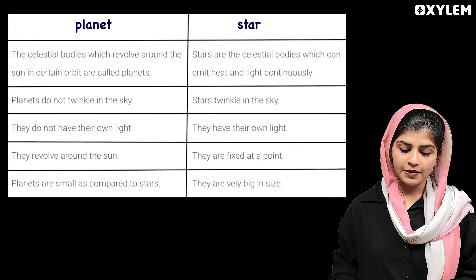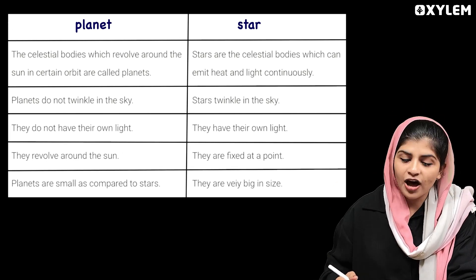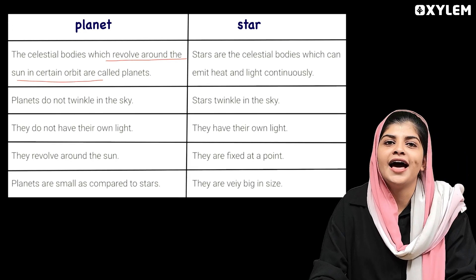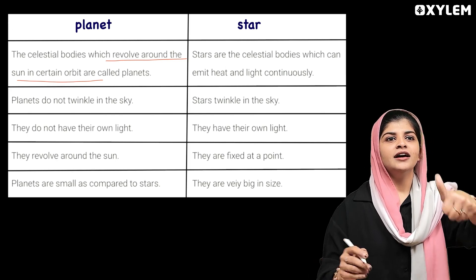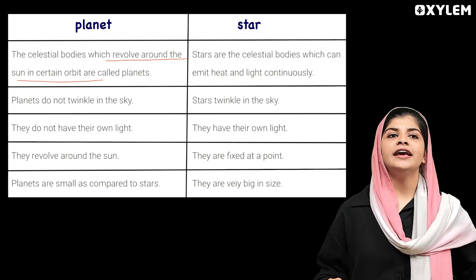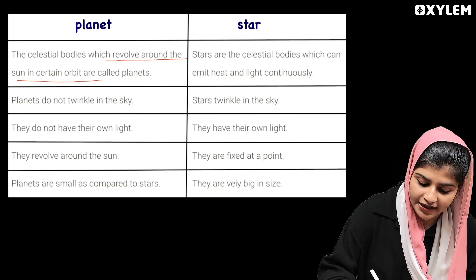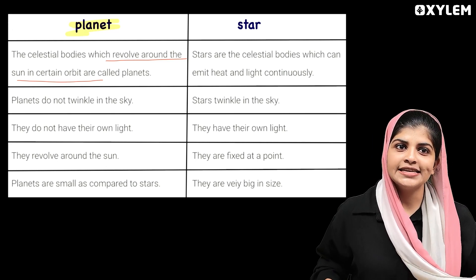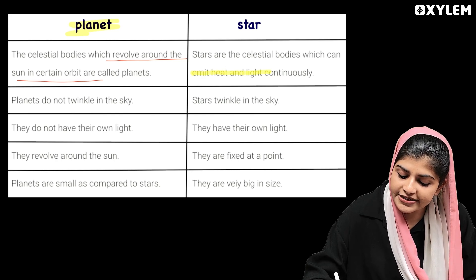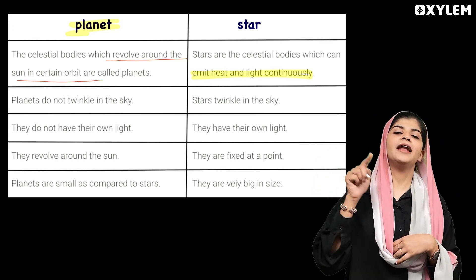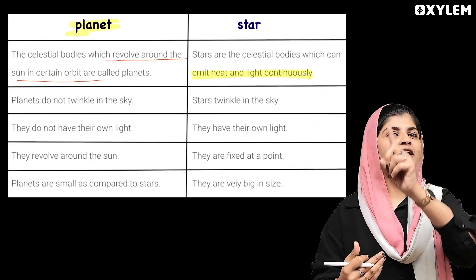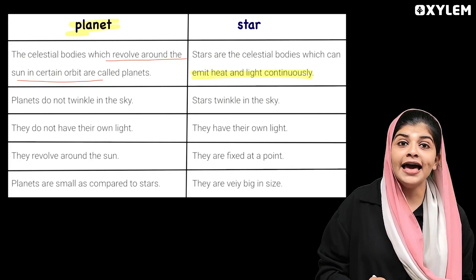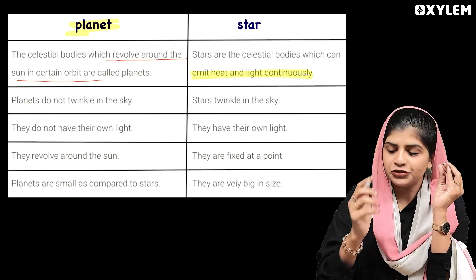Planets are celestial bodies which revolve around the sun in certain orbits. Stars are celestial bodies which can emit heat and light continuously. Planets do not twinkle in the sky, but stars twinkle in the sky.